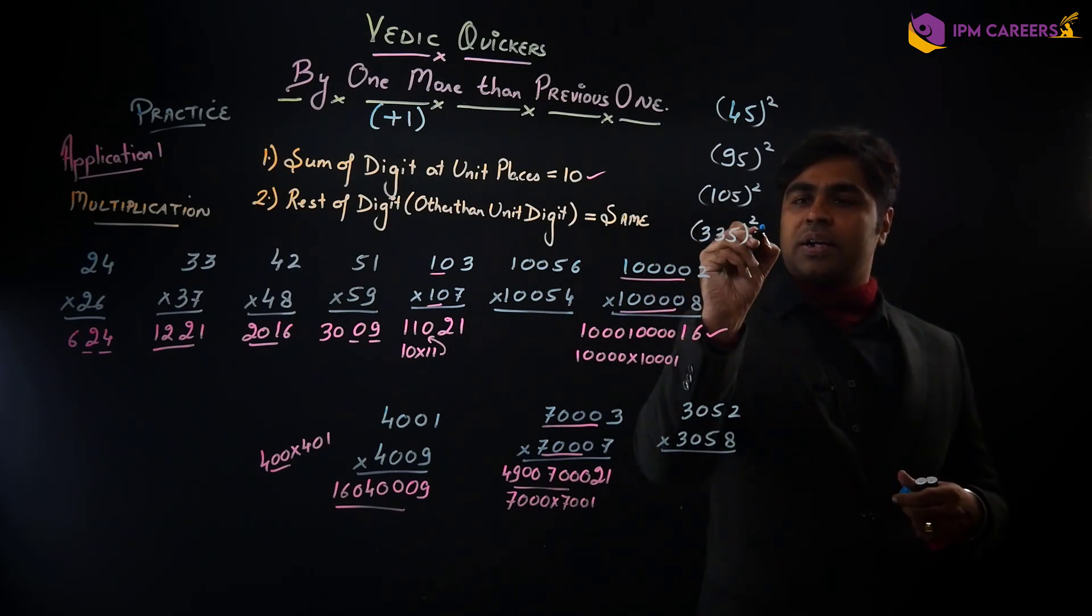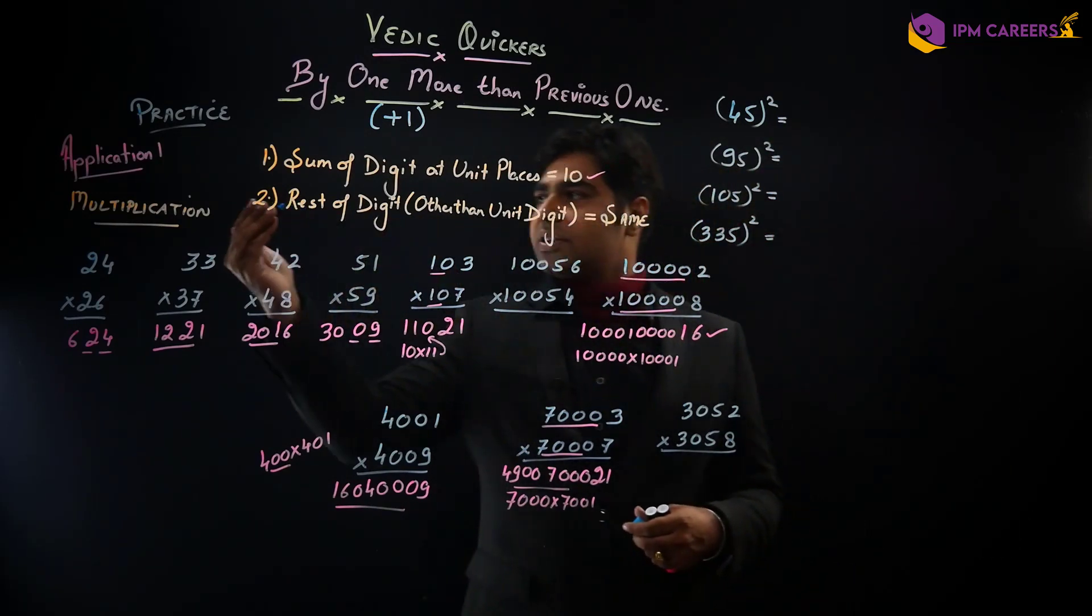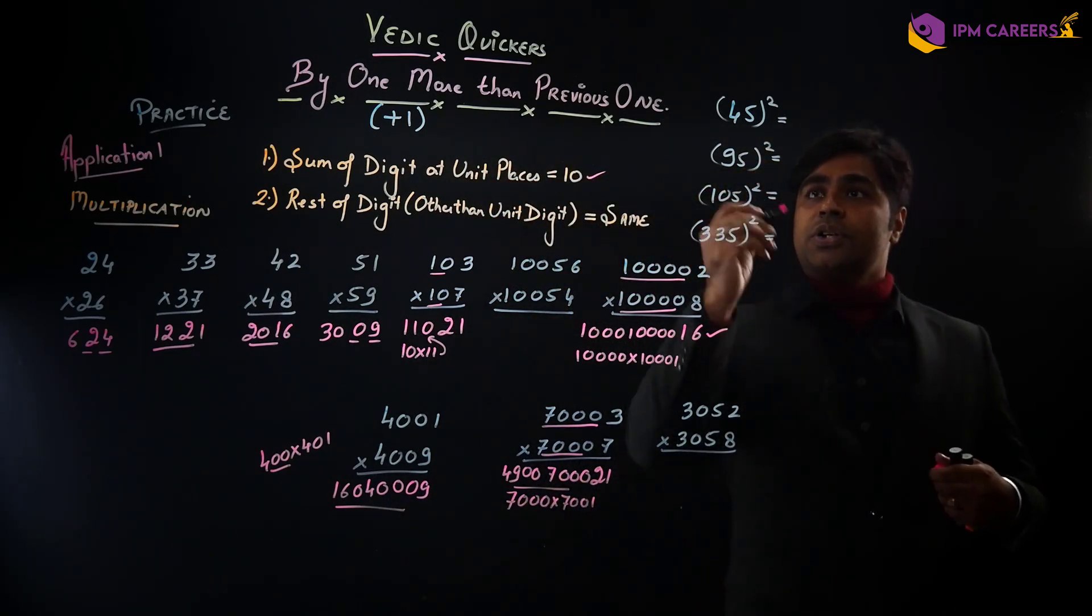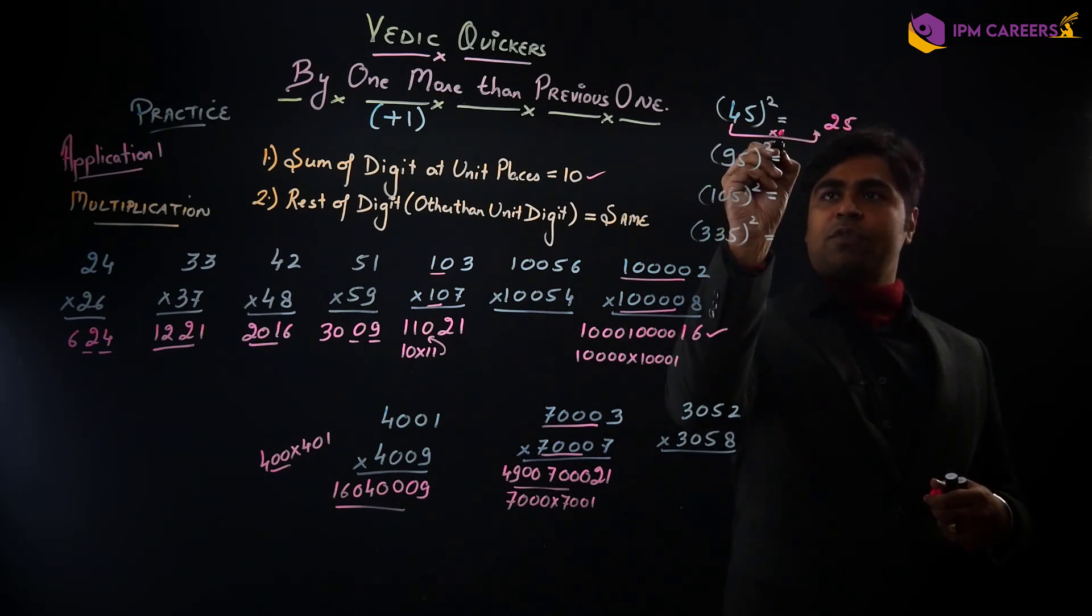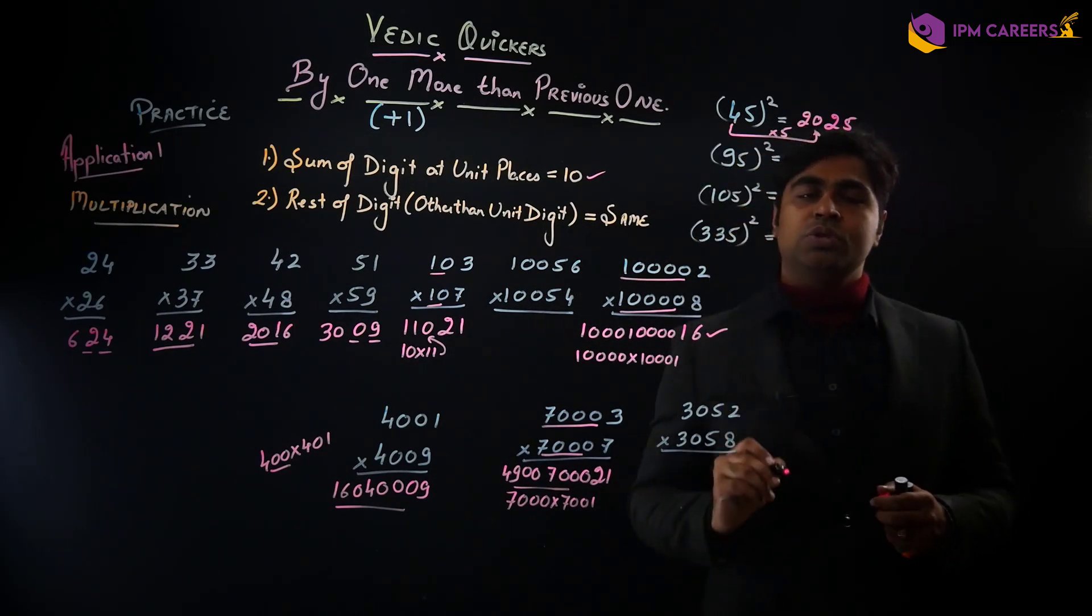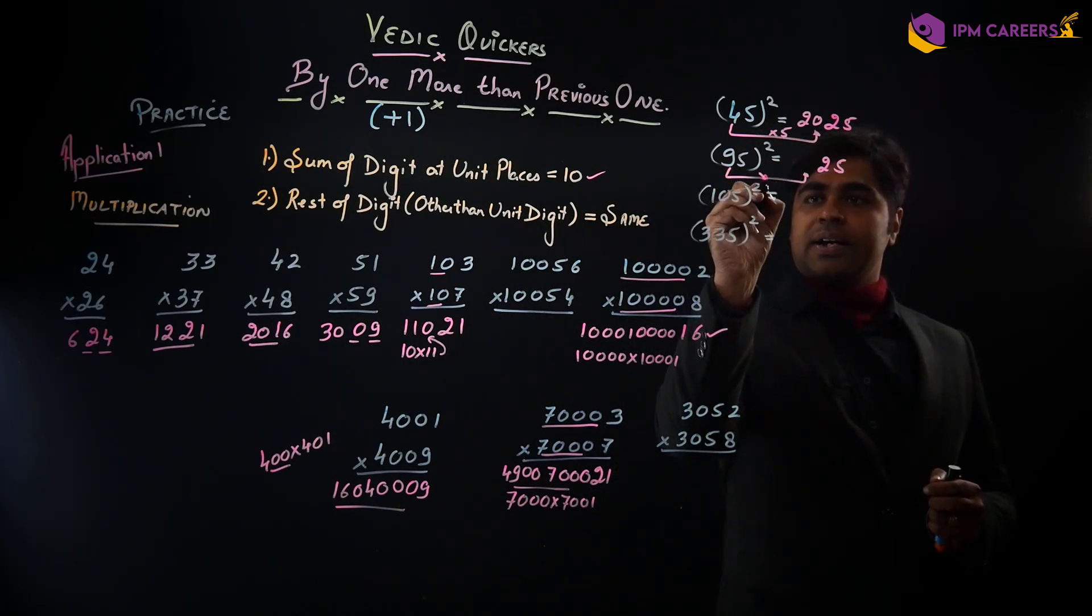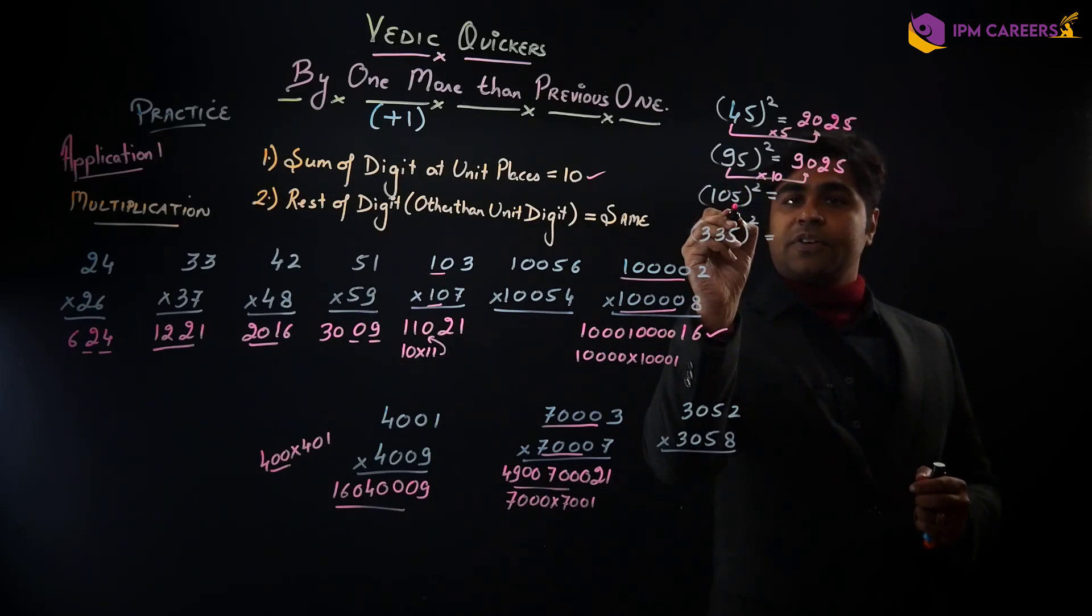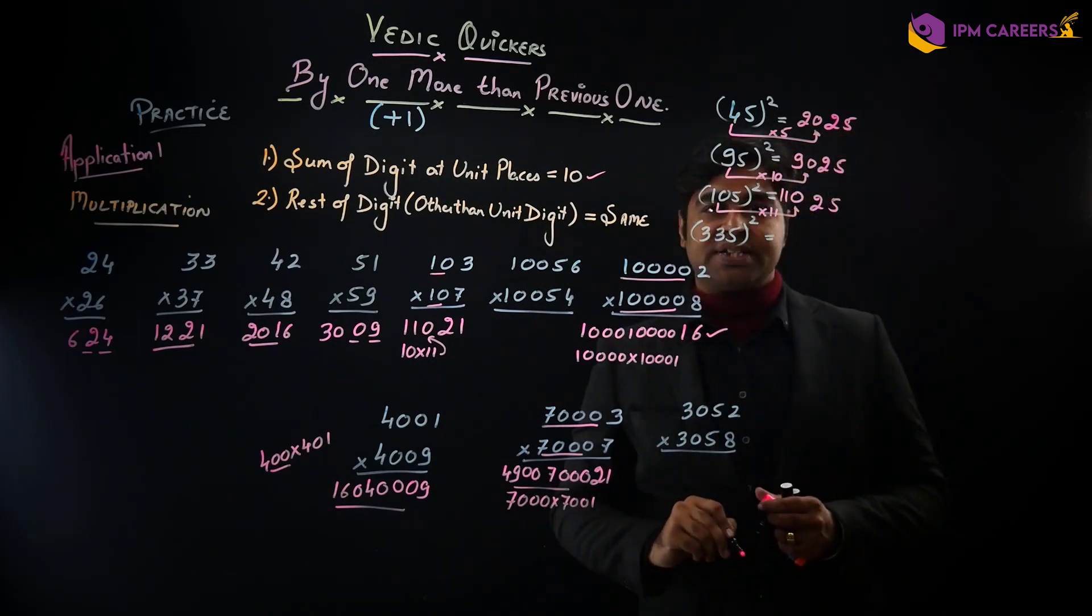335 ka square kya hoga. These 4 questions, we will also discuss application 1 ka continuation, that is squaring. So 5 ka square 25, 4 and 2, the next number is 5, 4, 5s are 20. So 2025 is your answer. 5 ka square 25. 9 ka next number is 10, so 9 and 10 is 90.